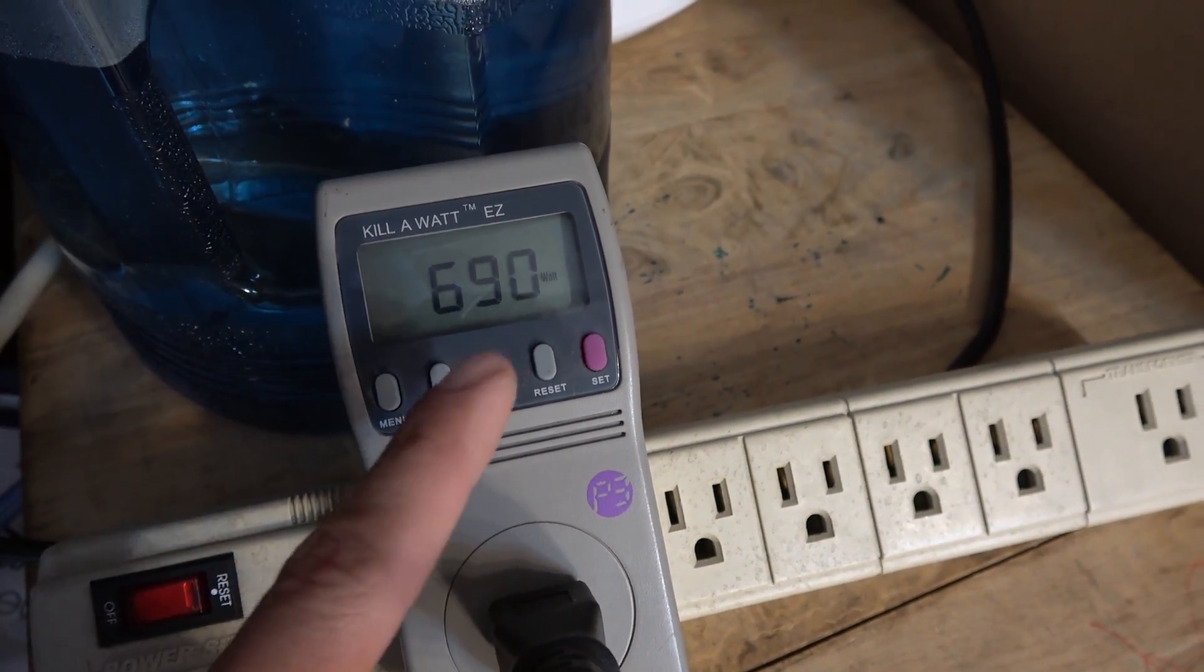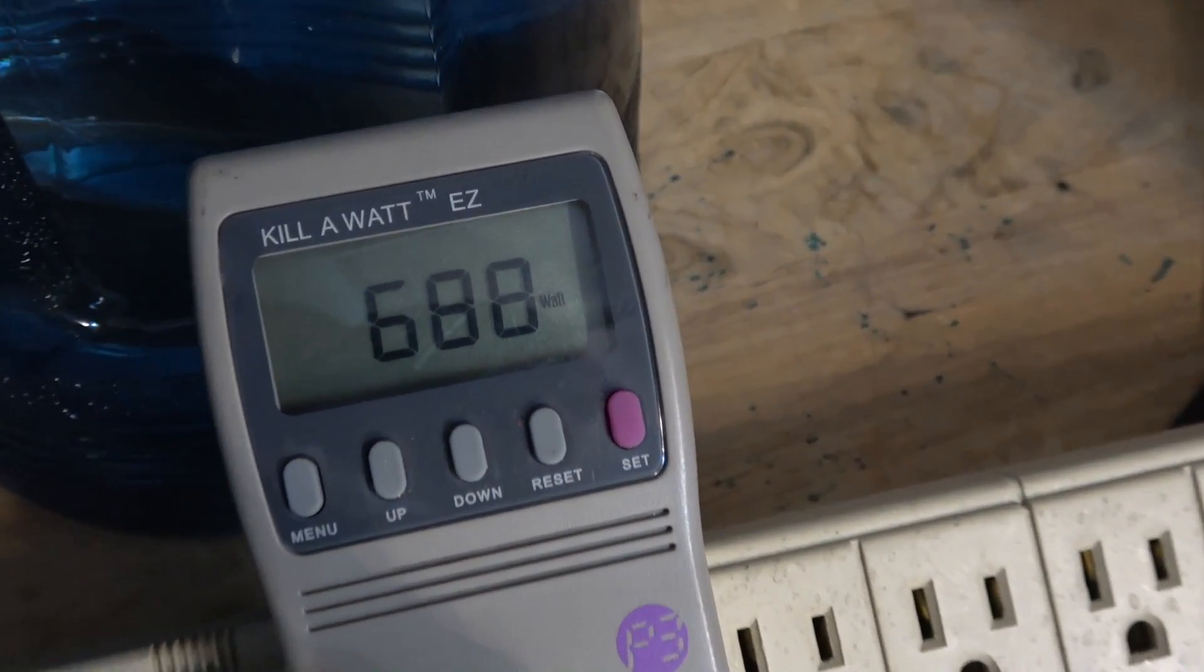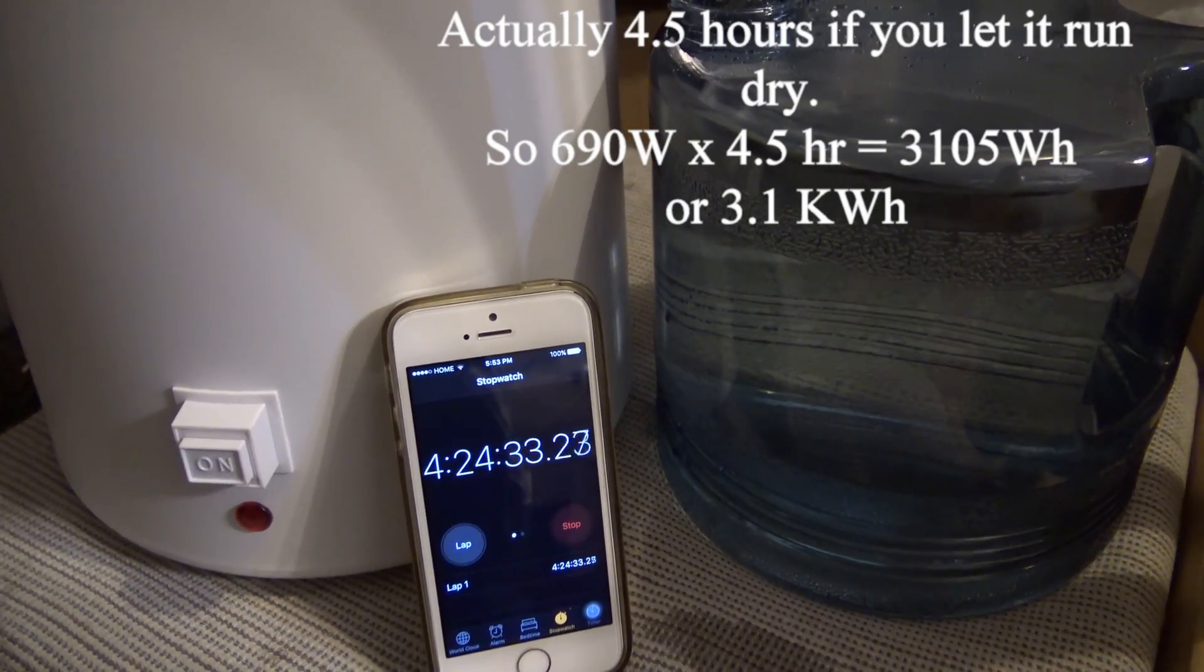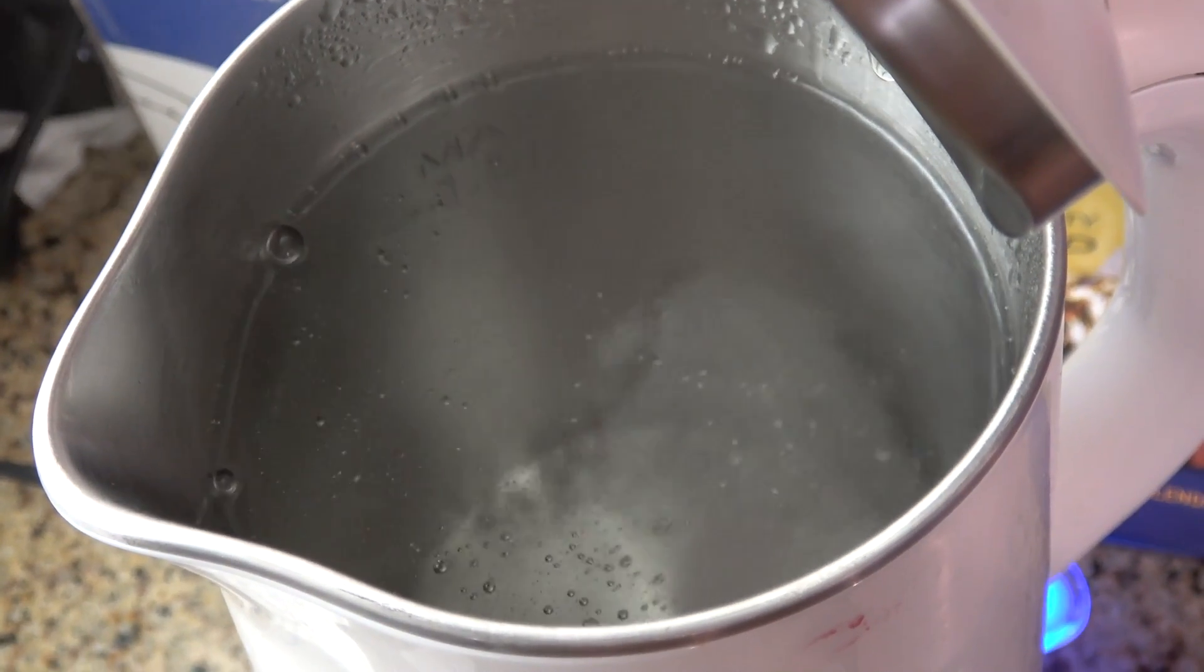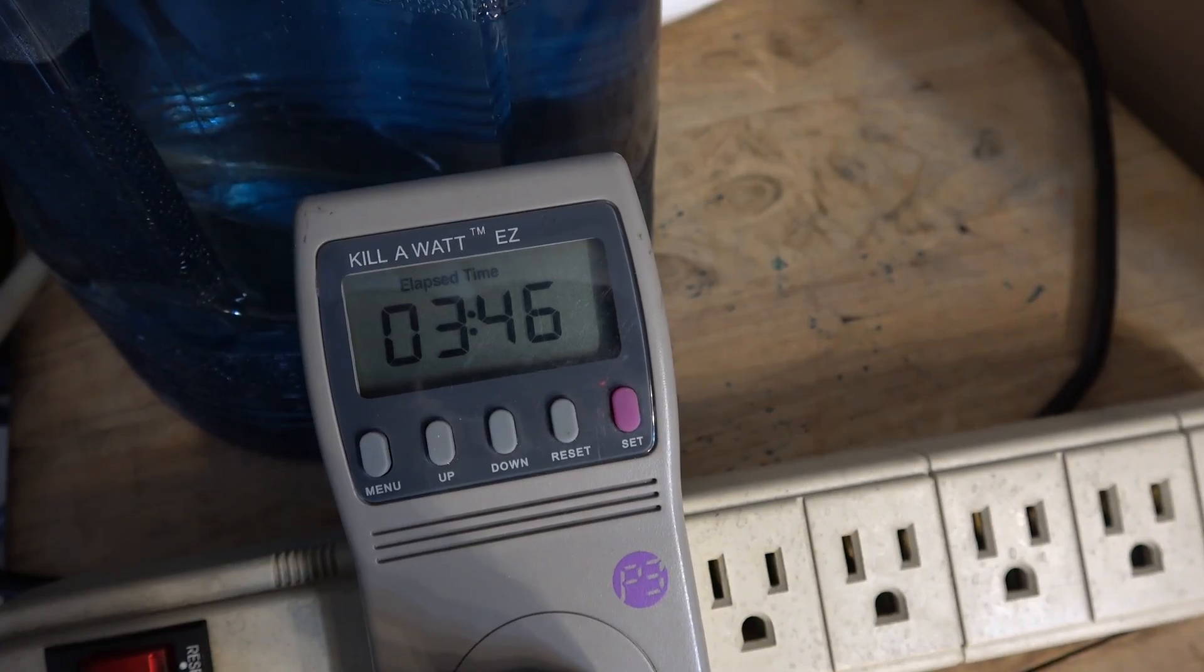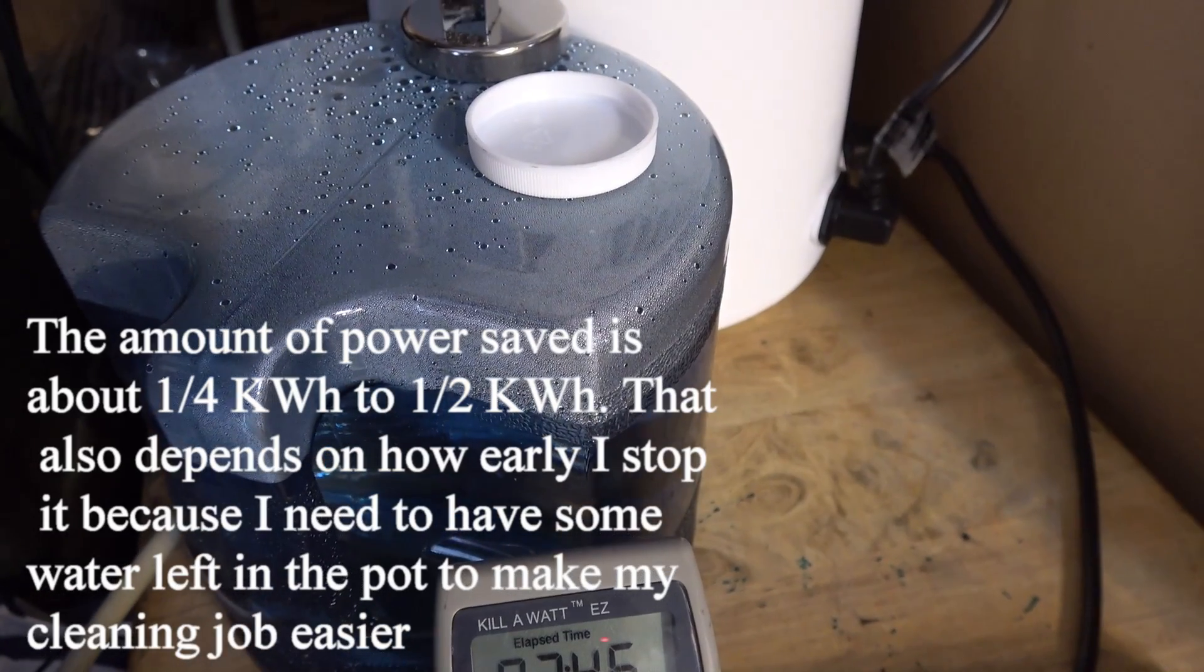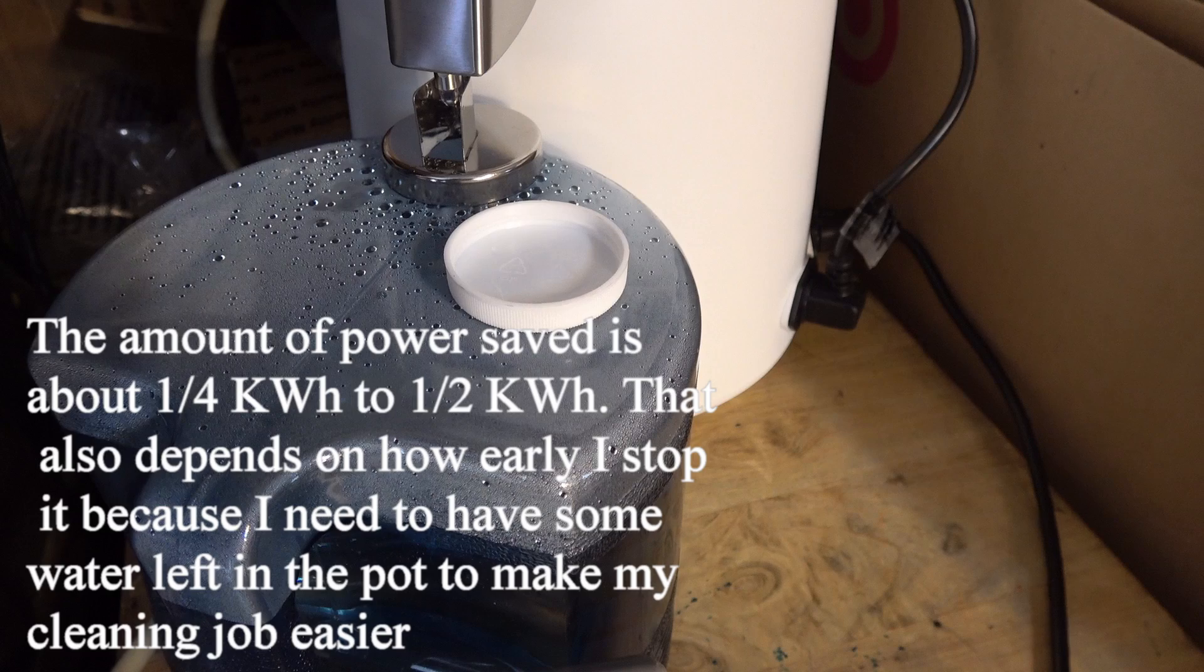The power it uses is about 700 watts from the very beginning all the way up to the end, and it takes about 4 hours to finish. So in total, it uses about 3 kilowatt hours of power. To save time and save on energy bill, I try to preheat the water before I put it in the pot. And it saves me about half an hour of run time and about a quarter of a kilowatt hour of energy. So this way, I can complete the distillation in about 3 and a half hours instead of 4 hours.